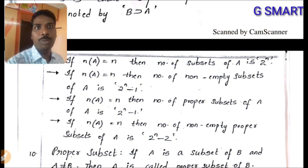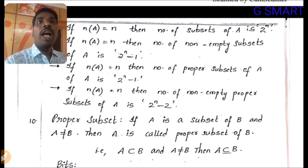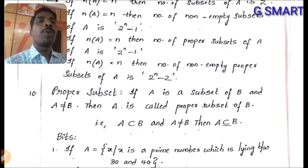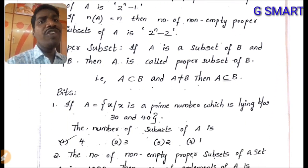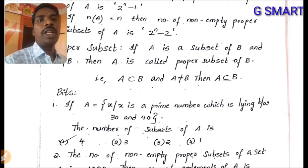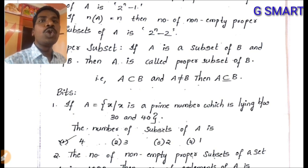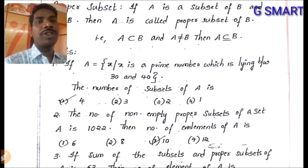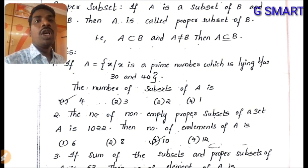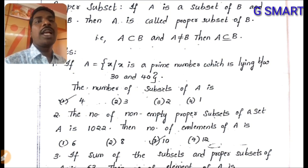Proper subset: if A ⊆ B and A ≠ B, then A is called a proper subset of B. Application example: if X = {x : x is a prime number between 30 and 40}, the primes are 31 and 37, so n = 2, and number of subsets = 2² = 4. Another example: if the number of non-empty proper subsets is 1022, then 2^n − 2 = 1022, so 2^n = 1024 = 2^10, giving n = 10.